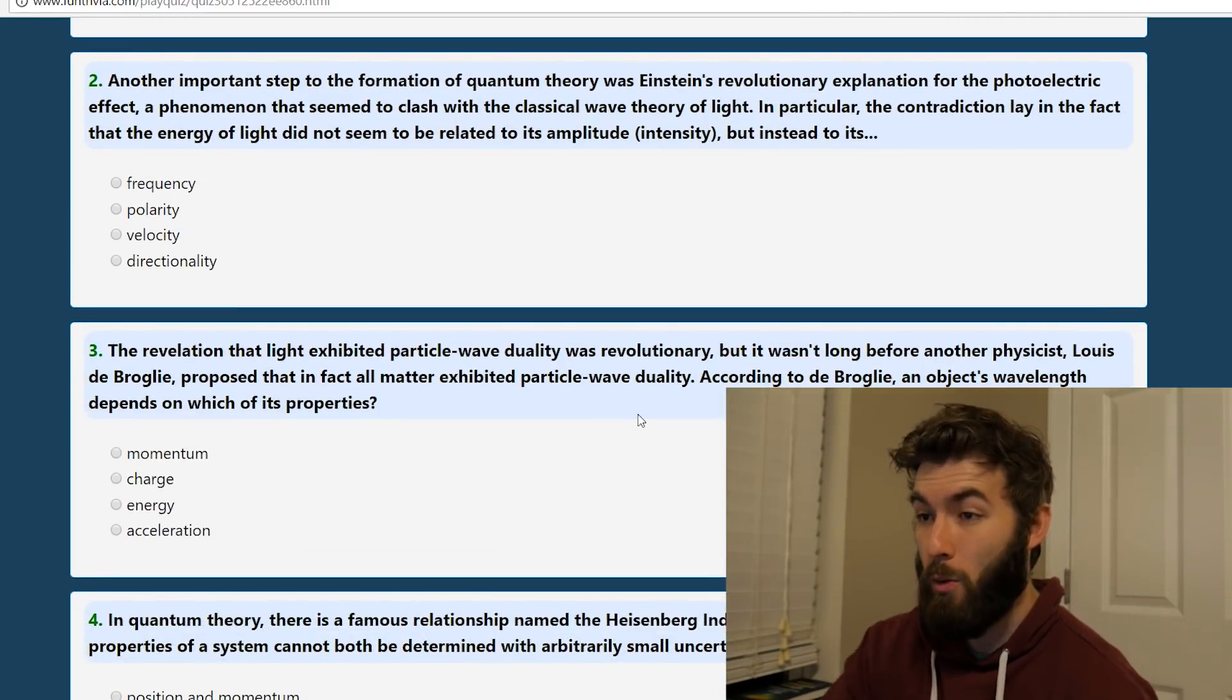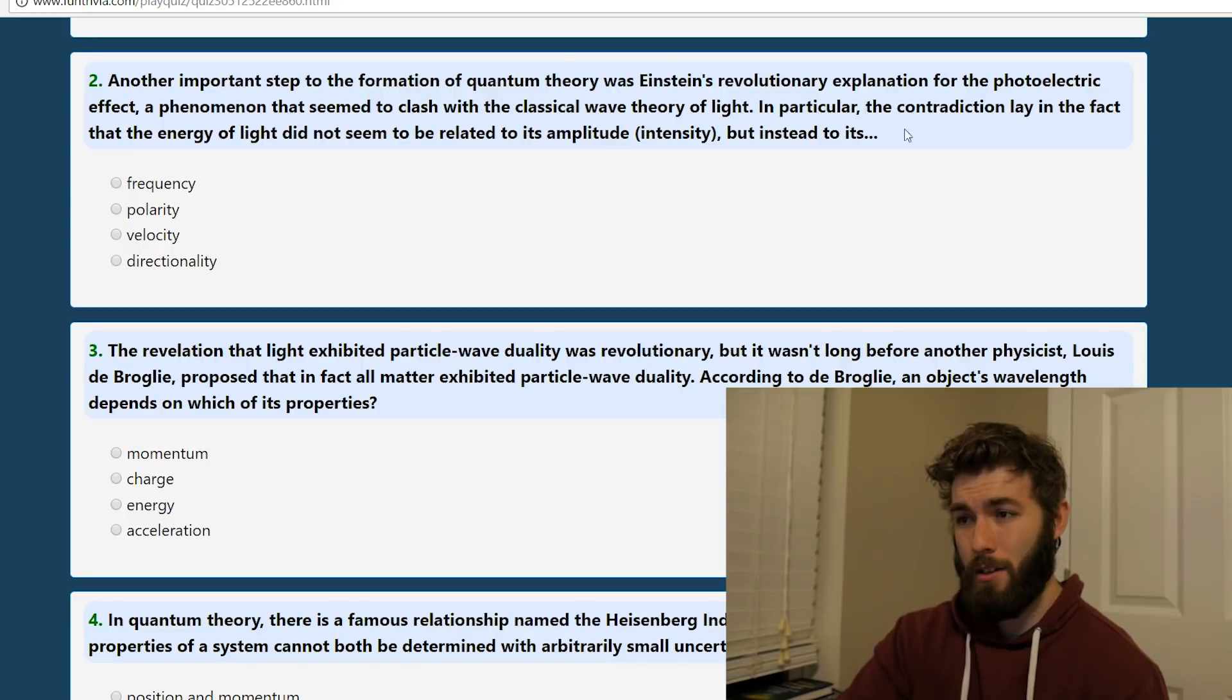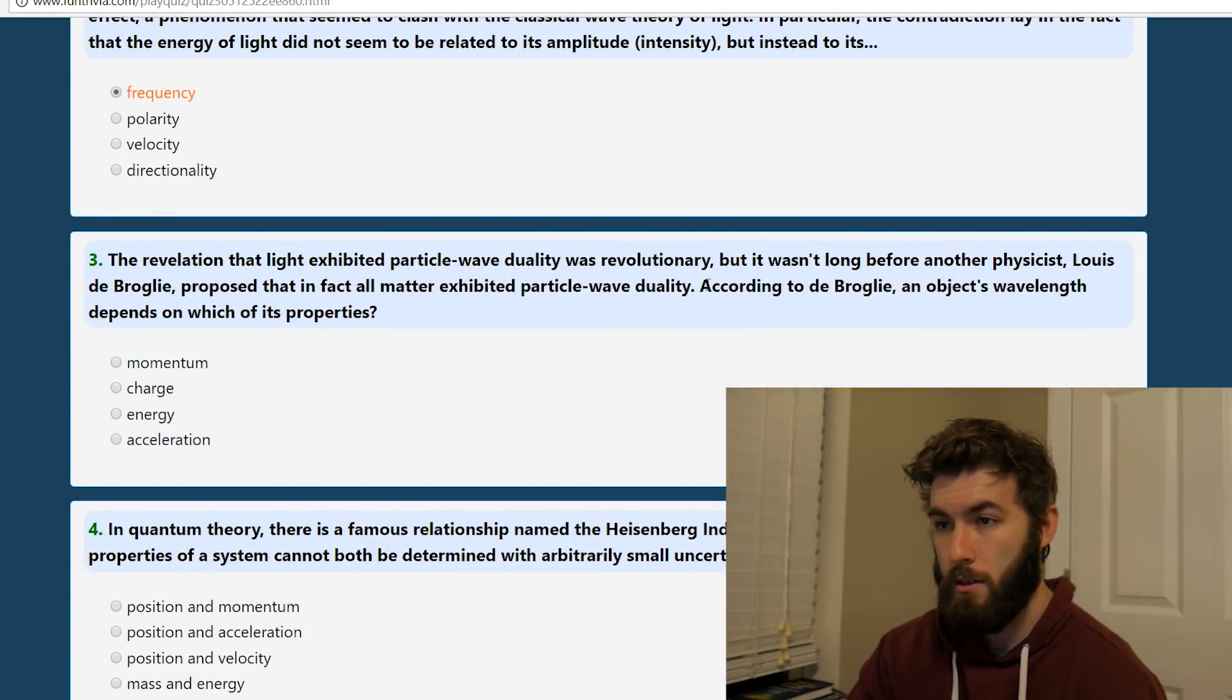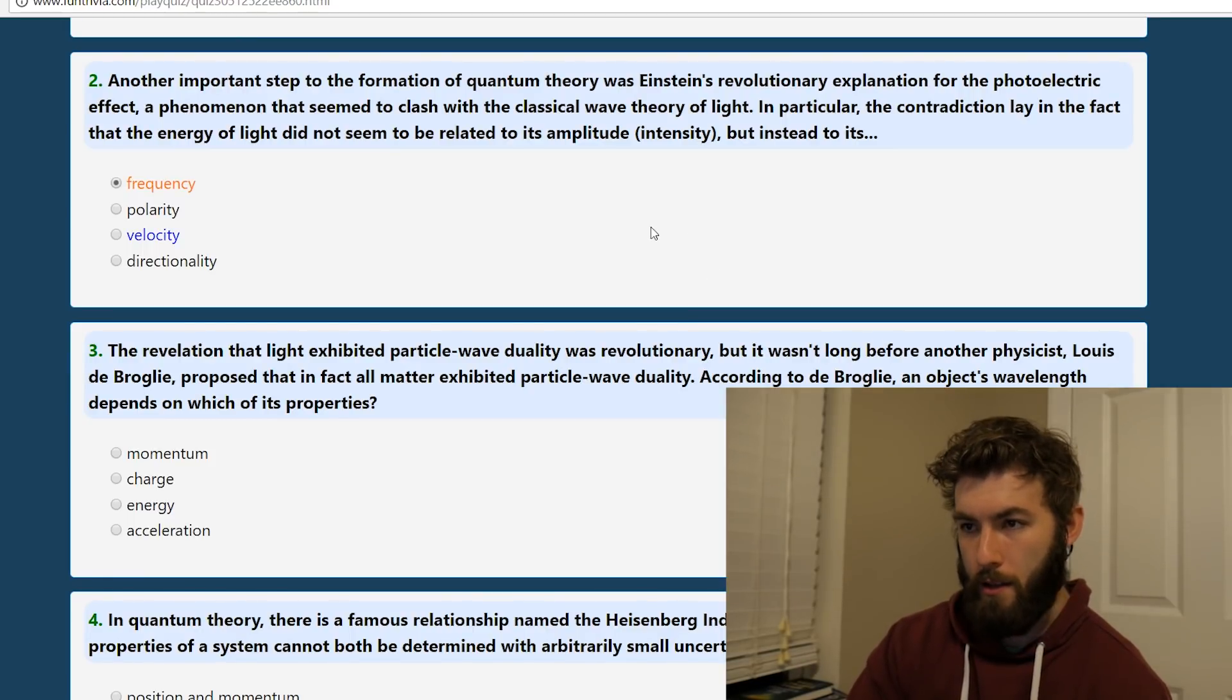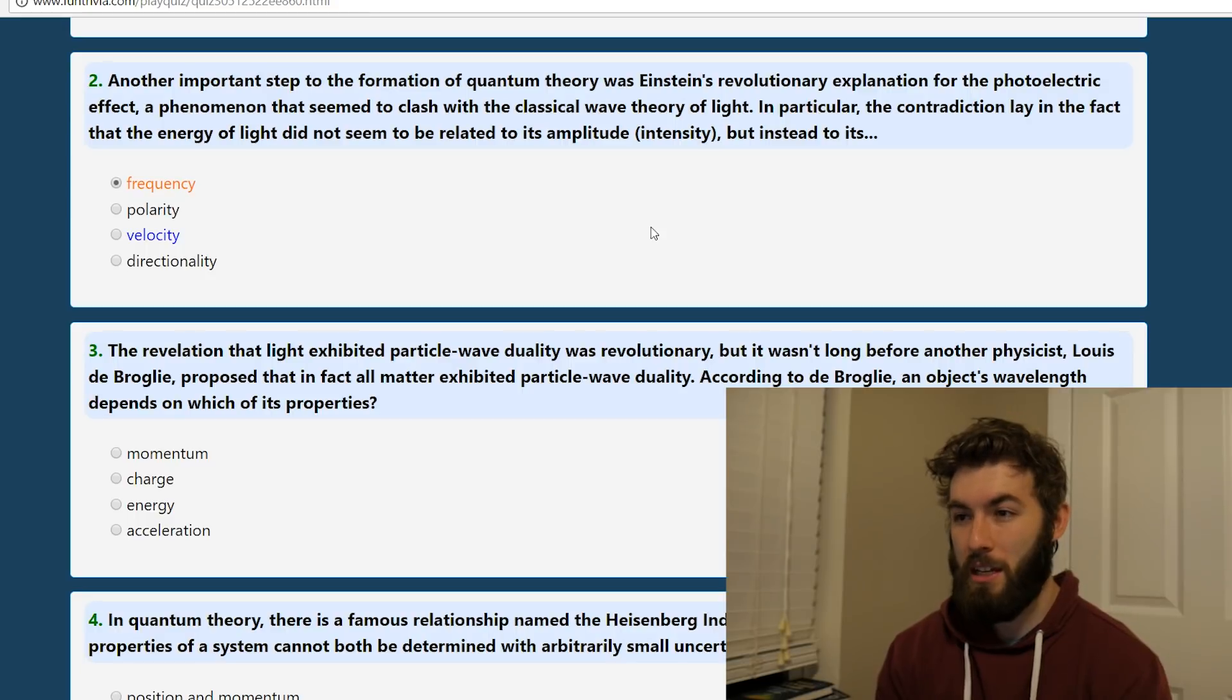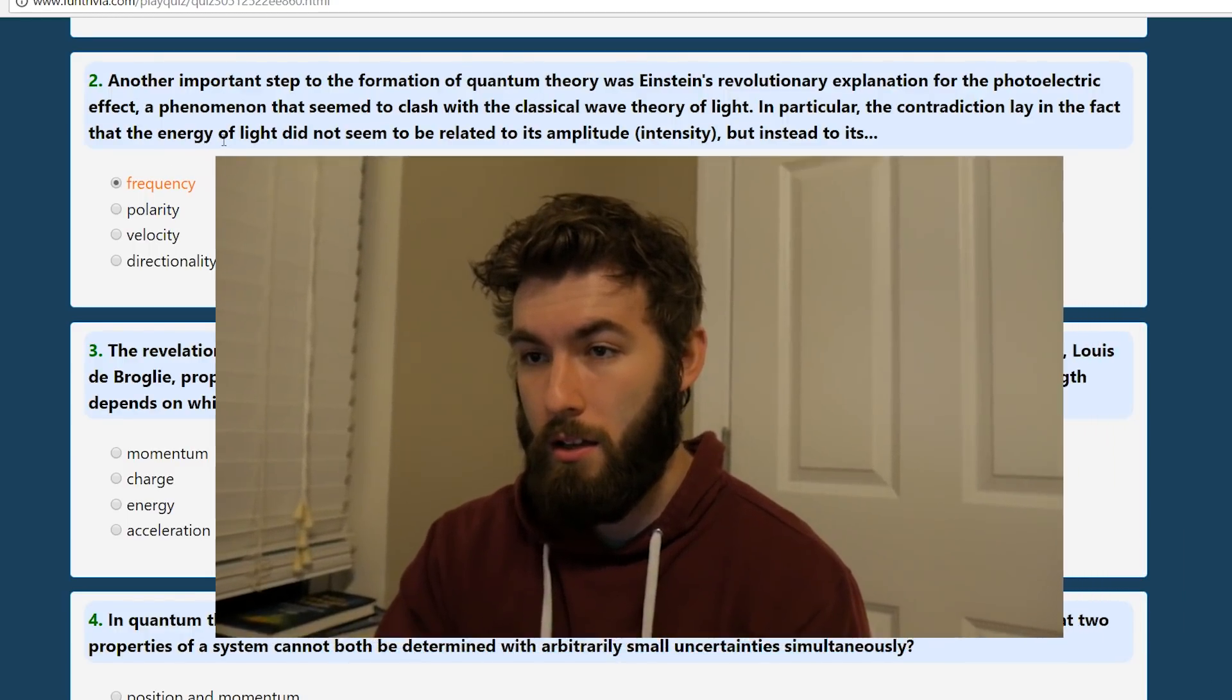Another important concept to the formation of quantum theory was Einstein's revolutionary explanation for the photoelectric effect, a phenomenon that seemed to clash with the classical wave theory of light. In particular, the contradiction lay in the fact that energy did not seem to be related to its amplitude, but instead to its frequency. Yes. Okay. Yeah, I always like to think of the photoelectric effect as, like, what they were doing before was essentially the equivalent of having like a brick wall, and then hitting it a bunch of times with a wiffle ball bat, and it doesn't matter how long you're gonna do it, it's not gonna knock away any bricks, but as soon as you change that to a sledgehammer, there you go. As soon as you got something with more energy.